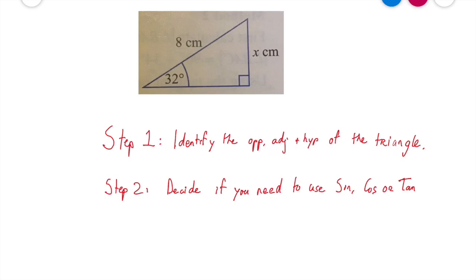So we know that the hypotenuse is always the side directly across from the right angle. So we find our right angle and we draw a line directly opposite it, and this is going to be our hypotenuse. So we know our hypotenuse is going to be eight centimeters.